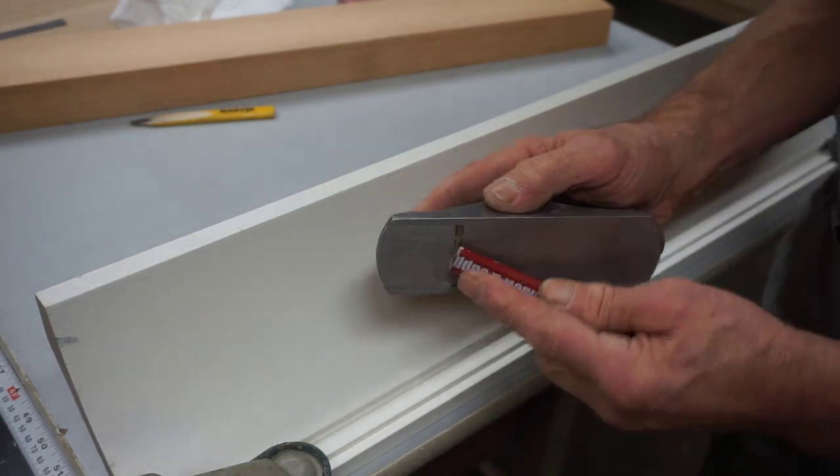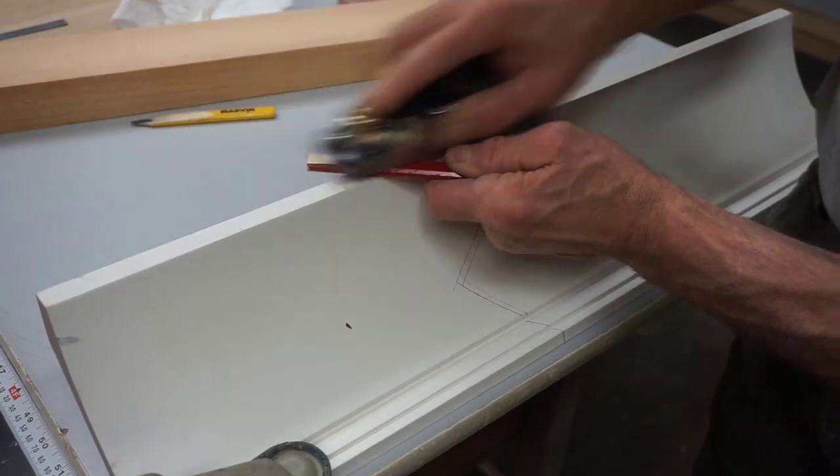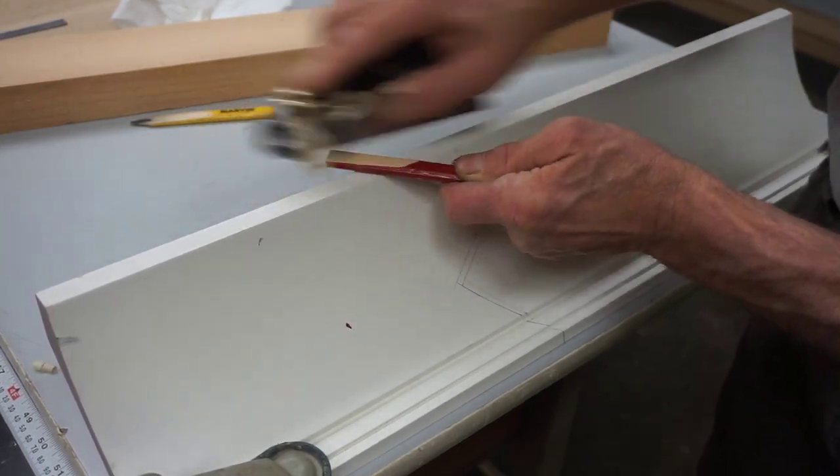Starting with the square end on a pencil, I simply use a block plane to shave a very shallow angle on one face of the pencil.